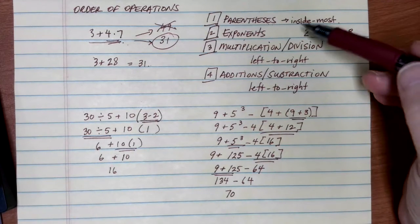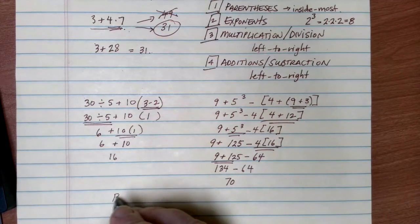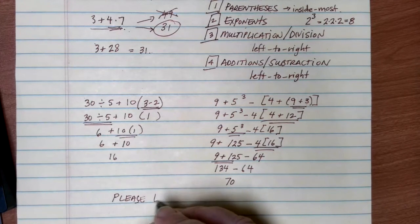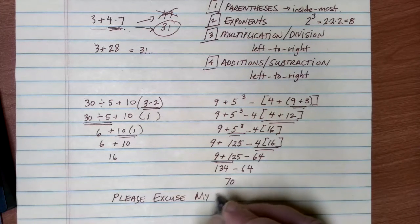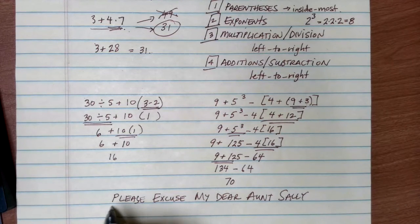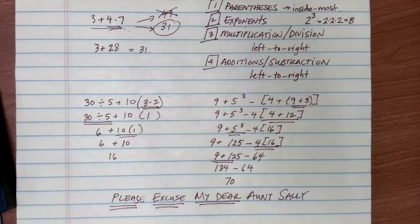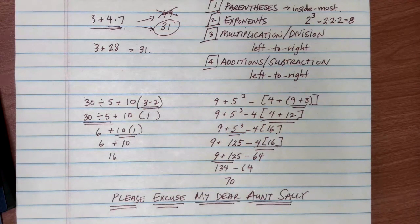If you have trouble remembering this order of operations, there's a common saying to help you: Please Excuse My Dear Aunt Sally. P for 'Please' reminds you to do parentheses first. E for 'Excuse' is exponents next. 'My Dear' together reminds you that multiplication and division have equal priority and are done left to right. 'Aunt Sally' reminds you that additions and subtractions are last, with equal priority, done left to right.